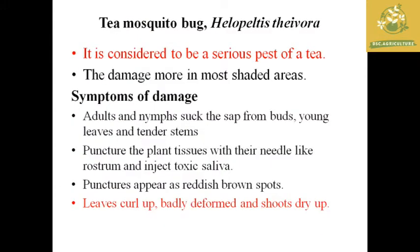The first important pest in tea is the tea mosquito bug, where the scientific name is Helopeltis theivora. It is considered a serious pest of tea and is most dangerous in shaded areas. The symptom of damage: adults cause leaf curling, and in several cases they show deformed stages of the plant.